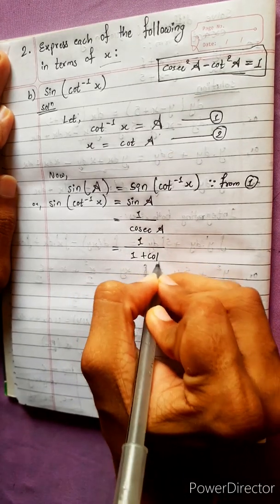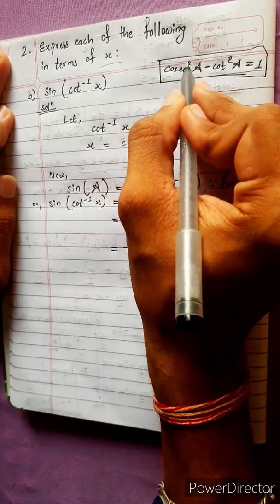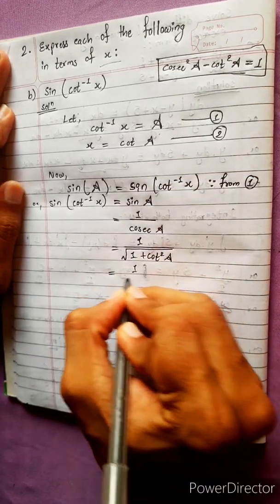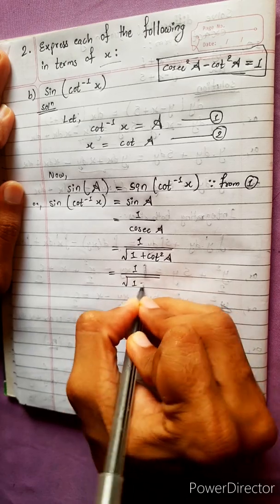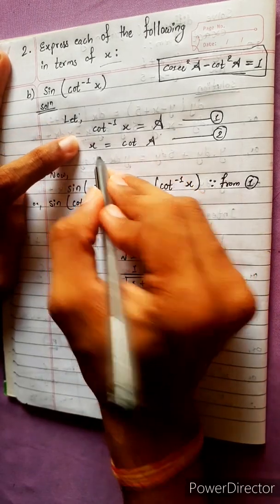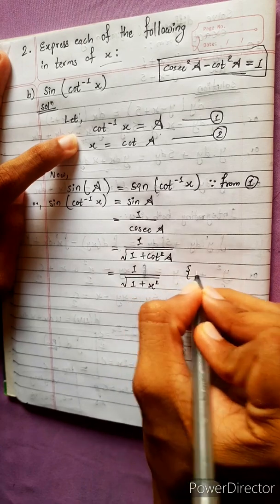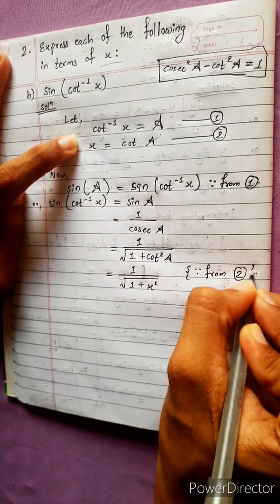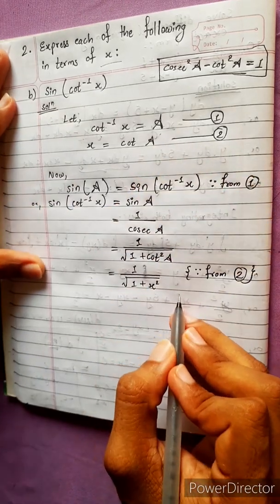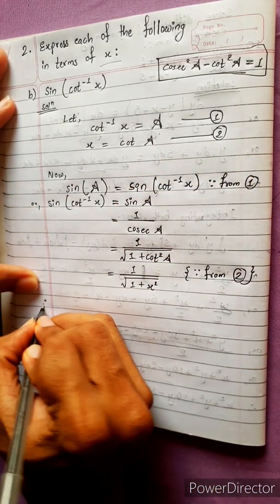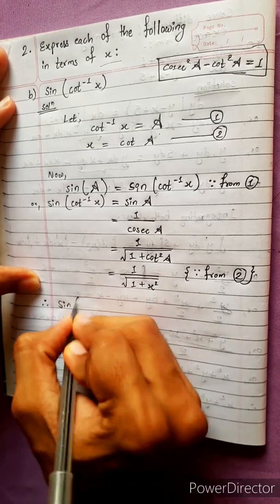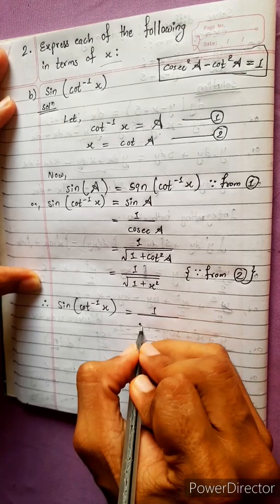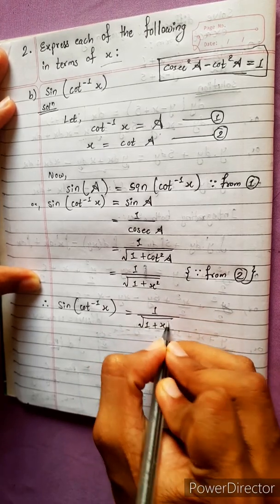Using the formula: 1 plus cot squared a equals cosec squared a, and taking the square root, we get sin(cot inverse x) equals 1 divided by under root of (1 plus cot a squared). From equation 2, substituting cot a = x, this becomes 1 divided by under root (1 plus x squared).